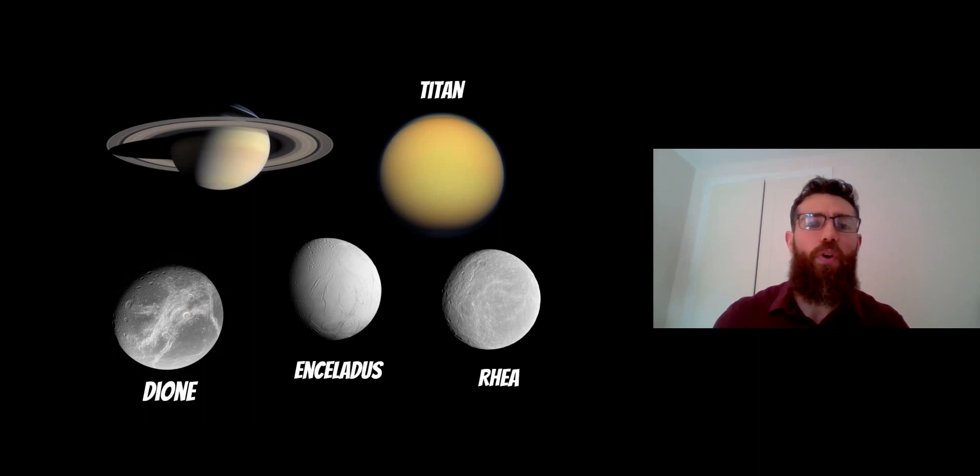You also have four around Saturn that have an atmosphere: Titan, Dione, Enceladus, and Rhea. You can see with Titan it's a bit more obvious because it's quite a hazy and thick atmosphere, but four of Saturn's moons have atmospheres as well.